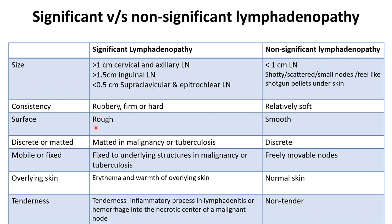Check the surface — surface is rough in significant lymphadenopathy, smooth in non-significant. Check whether the lymph nodes are discrete or matted: matted lymph nodes are seen in malignancy and tuberculosis, while in non-significant lymphadenopathy the lymph nodes will be discrete. Check whether the lymph nodes are mobile or fixed — fixed lymph nodes are seen in malignancy and tuberculosis, while freely movable nodes are seen in non-pathological, non-significant conditions.